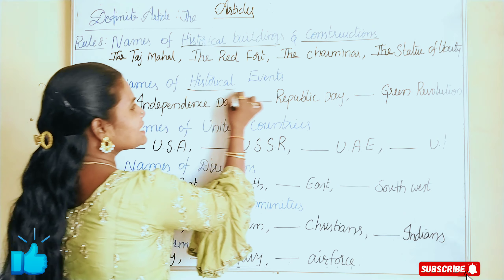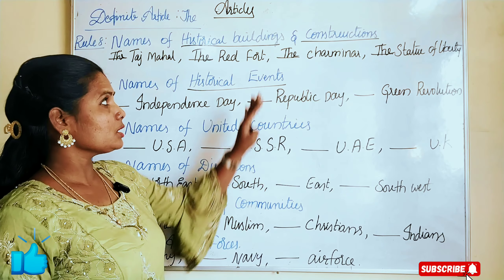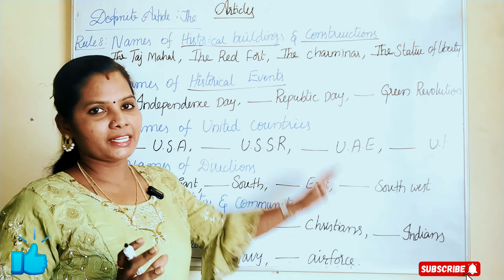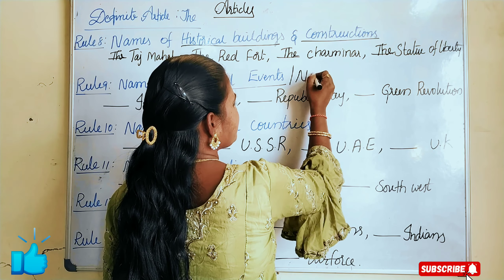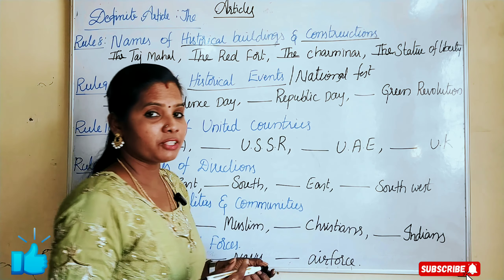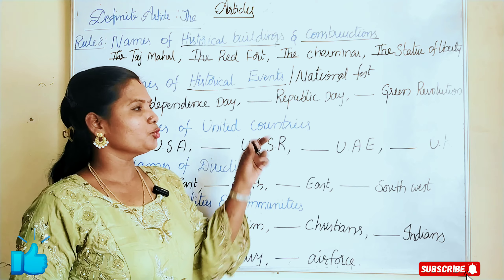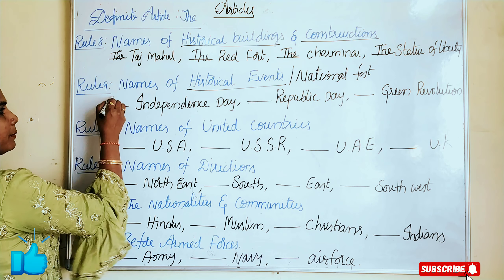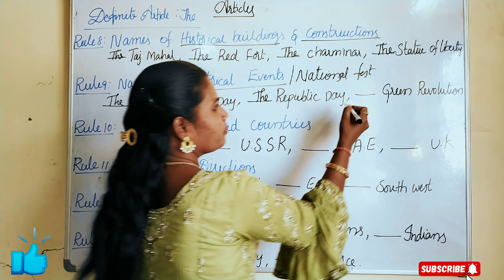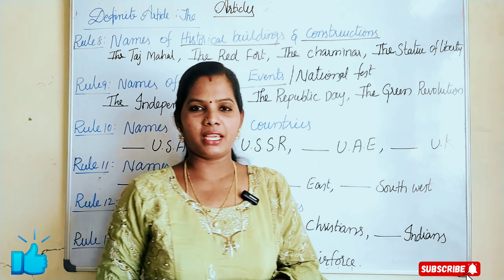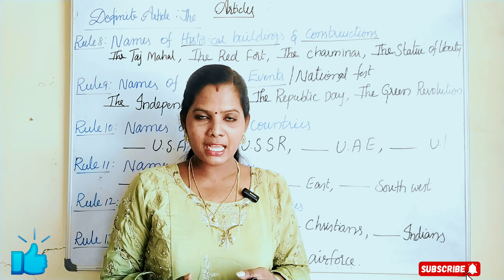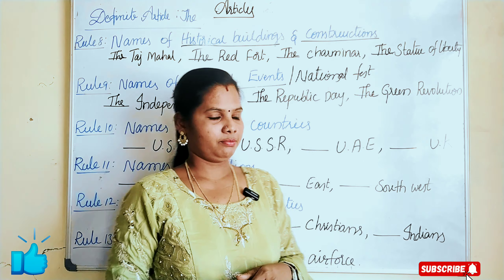The next rule is names of historical events. Don't get confused here. These are historical buildings, and this rule covers historical events. They also have history and legacy, and a special priority. Like national festivals — before all national festival names, we have to use the article 'the'. For example: the Independence Day, which is very important to Indians, and the Republic Day, followed by the Green Revolution and the White Revolution. Before all of these, we have to use the article 'the'.